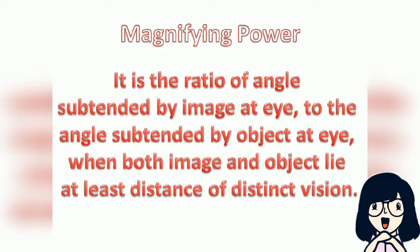Magnifying power is defined as the ratio of the angle subtended by the image at the eye to the angle subtended by the object at the eye, when both image and object lie at the least distance of distinct vision.